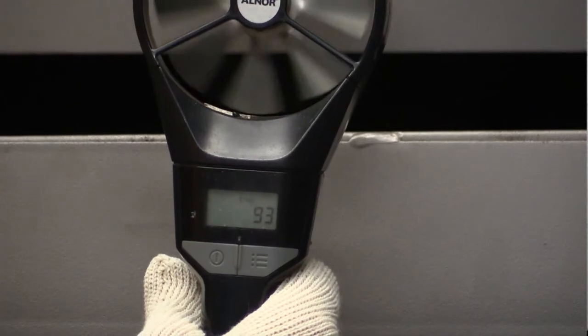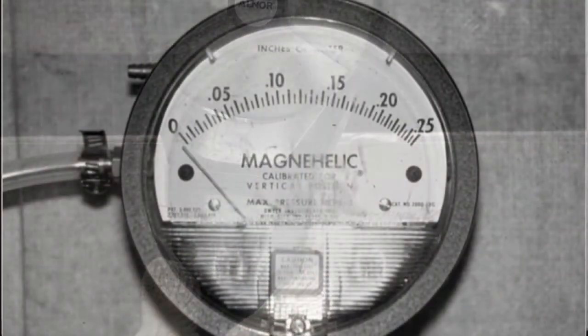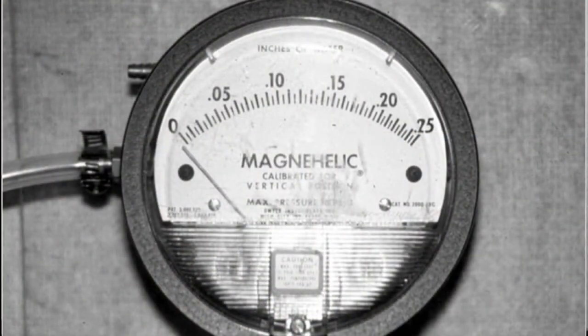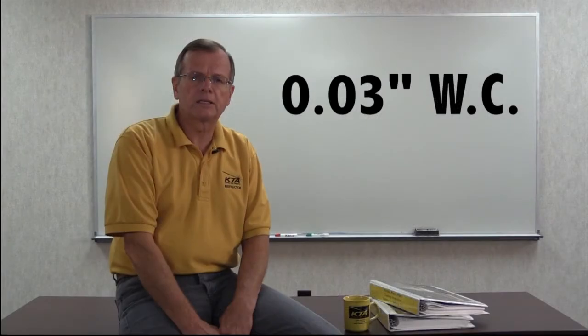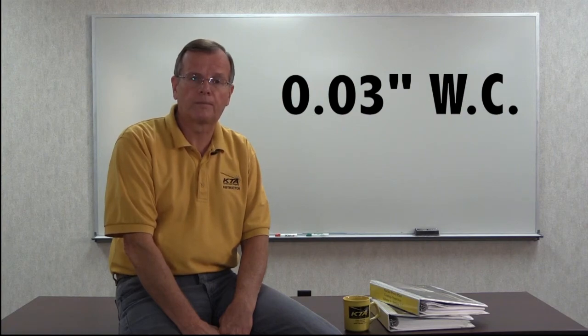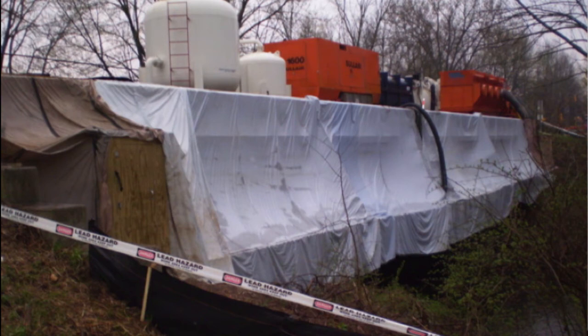In order to determine the negative pressure achieved, magnehelic gauges are used. One tube is placed inside the containment and the other exposed to the conditions outside the containment to obtain a reading. Guide 6 recommends a negative pressure of .03 inch water column. Another approach for verifying negative pressure is to simply observe the containment walls for inward deflection, but you need to do this with extreme care to prevent misinterpreting deflection caused by wind with deflection caused by mechanical ventilation.